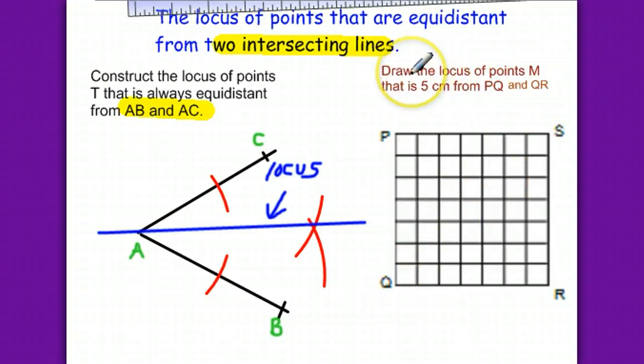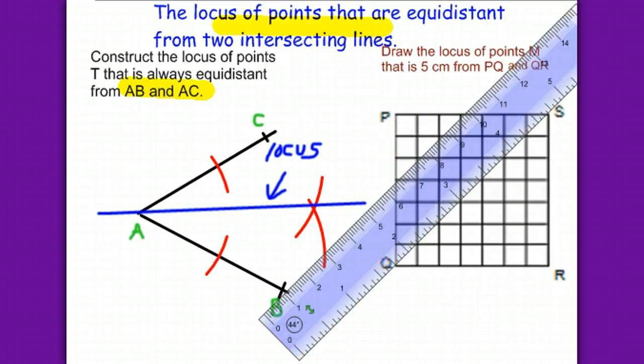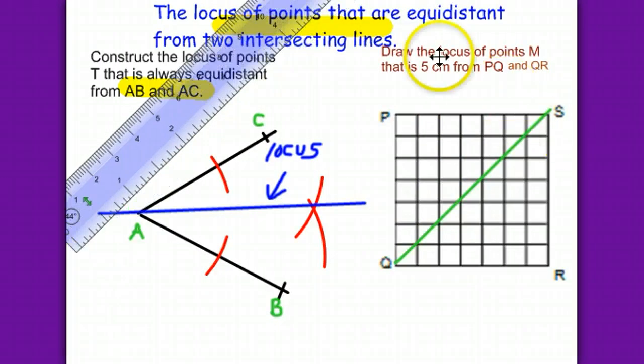We just need to draw. We don't need to construct here, so that will be easy. The green line here is our locus. That green line here is the locus—this line QS.